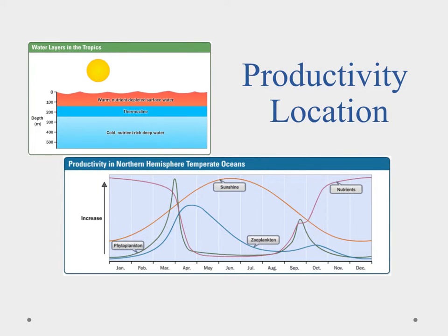Let's look at productivity by location — and by productivity here we're talking photosynthetic productivity. The first place we're going to look is the tropics. In the tropics we have warm, nutrient-depleted surface water, a thermocline — that temperature gradient we talked about — and then cool, nutrient-rich water below.